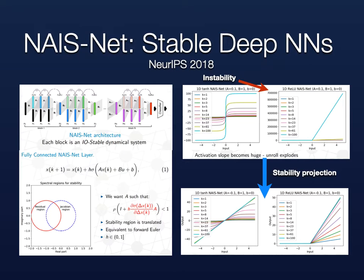A known problem with RNNs is that they can suffer from vanishing or exploding gradients. To deal with vanishing gradients, one can use LSTMs, highway networks, or residual networks. Exploding gradients, however, remain a risk unless we adopt some form of normalization.